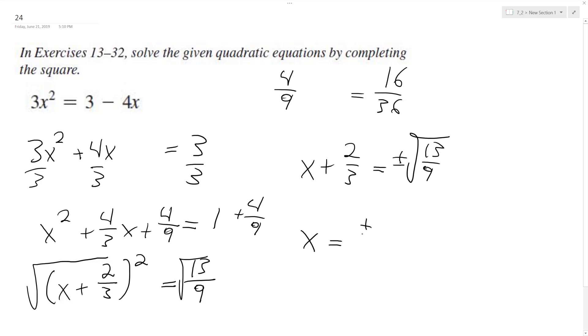x is equal to plus or minus the square root of 13 over 9 minus 2 thirds. And that's it.